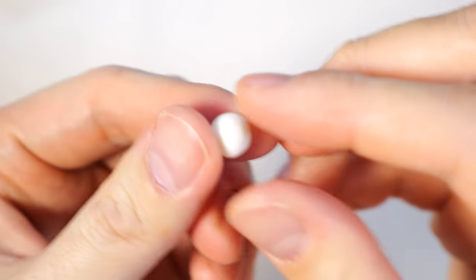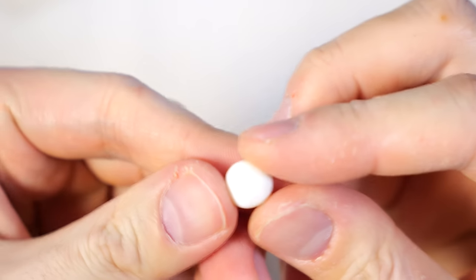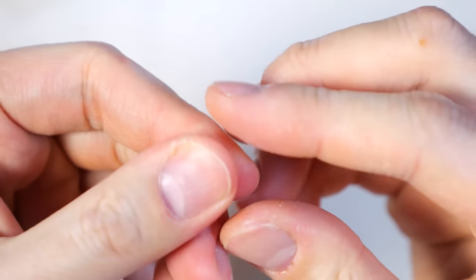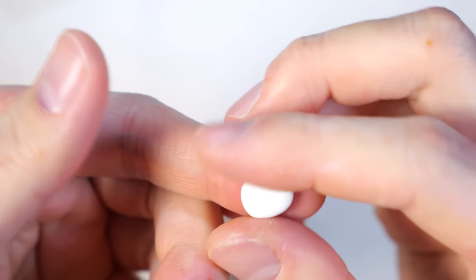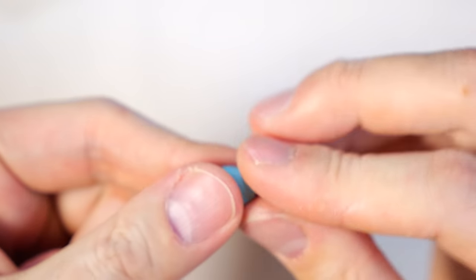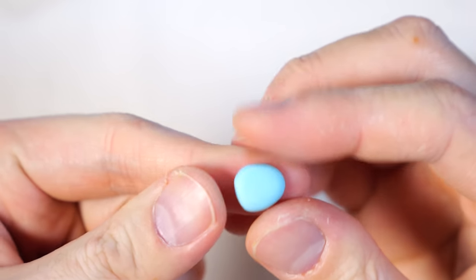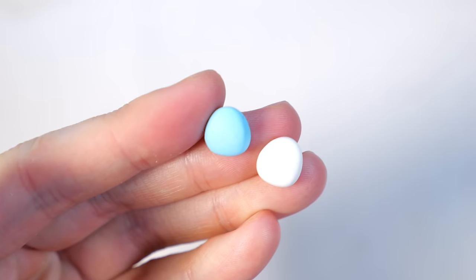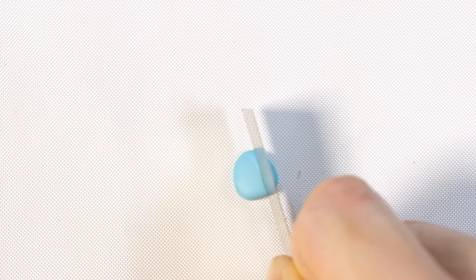Next we're gonna make an ocean sunfish or a mola mola fish, so we're gonna take some white clay and pinch it into a rounded triangle shape. We're gonna do the same thing with blue clay, and with our polymer clay blade we're gonna cut it at two thirds and one third, so we're gonna add those two pieces together.